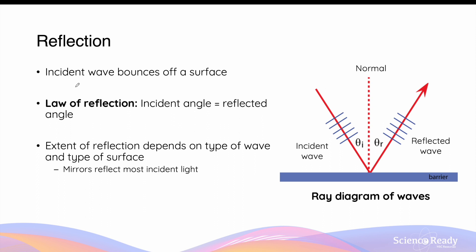Let's talk about reflection. Reflection is when the incoming or incident wave bounces off the surface or boundary between two media. Reflection of a wave always obeys the law of reflection, which simply states that the angle of incidence is equal to the angle of reflection. These two angles can only be recognised by drawing a normal vector — a perpendicular line to the boundary between two media. The angle of incidence refers to the angle between the propagation direction of the incoming wave and the normal vector.